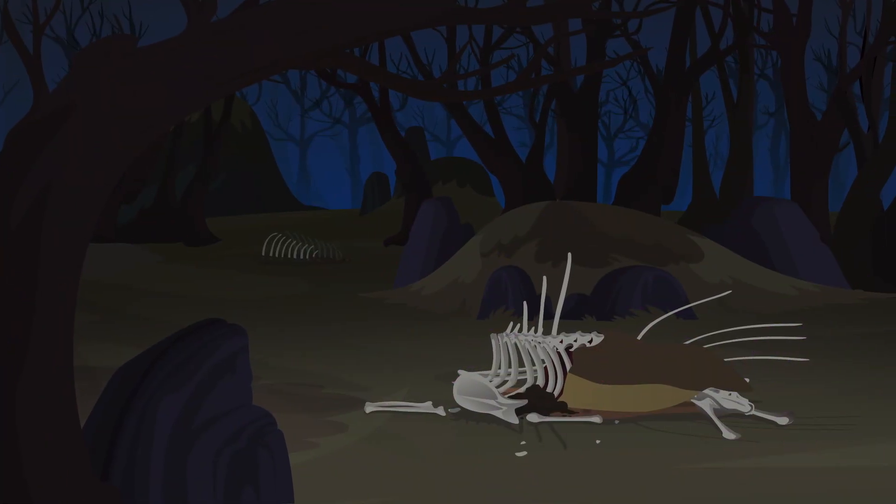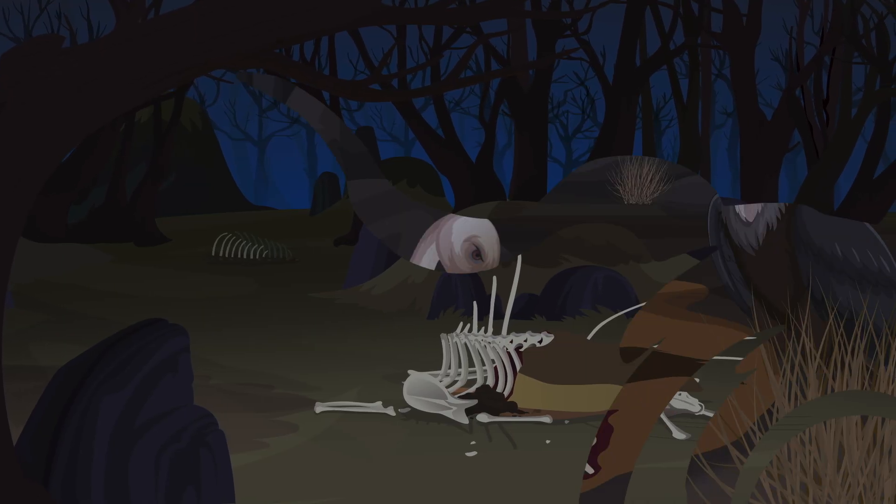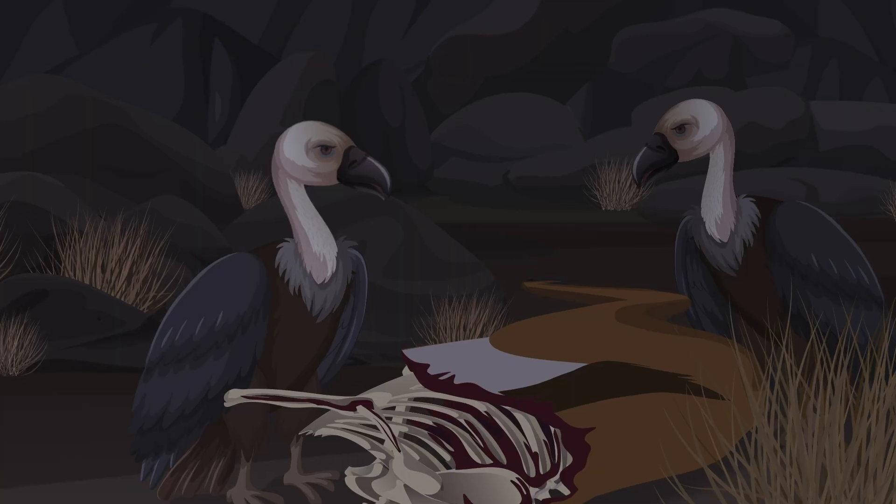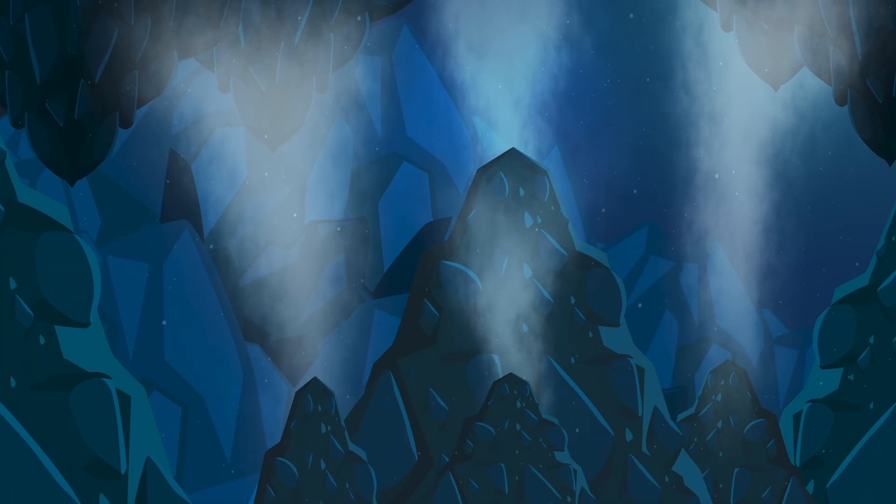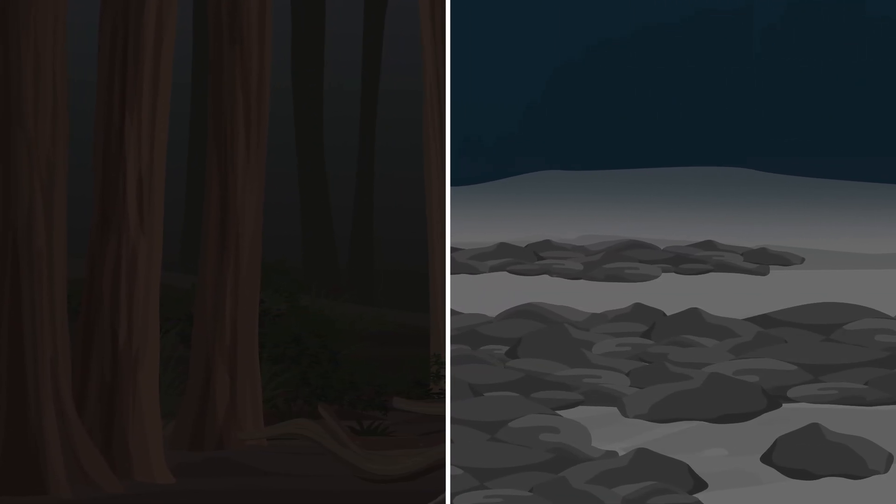Whenever prey animals die, predators tend to follow, driving most of the world's carnivores to extinction. A few species may temporarily survive by preying on the remains of other animals. Others may find solace at the bottom of the ocean around deep sea geothermal vents. But the vast majority of species, both marine and terrestrial, would not survive.